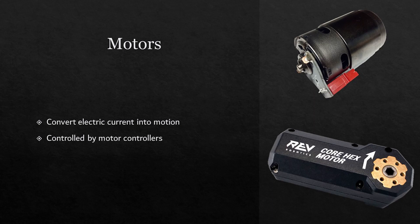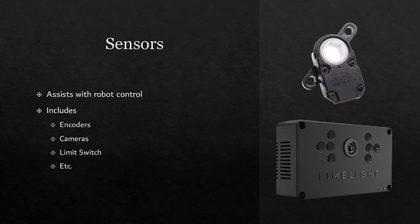The top motor is a 775 Pro motor and is commonly used in FRC, while the lower motor is a REV core hex motor and is used in FTC.